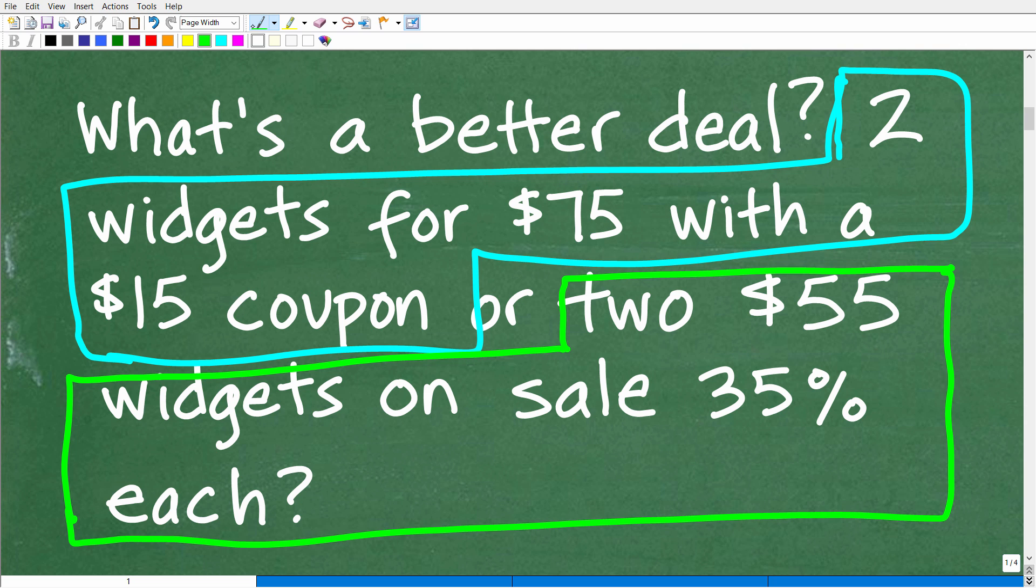So really this problem is going to come down to calculating each deal and then comparing. We definitely know that this is the correct answer, but let's suppose we didn't know the answer. We're going to have to do the math.